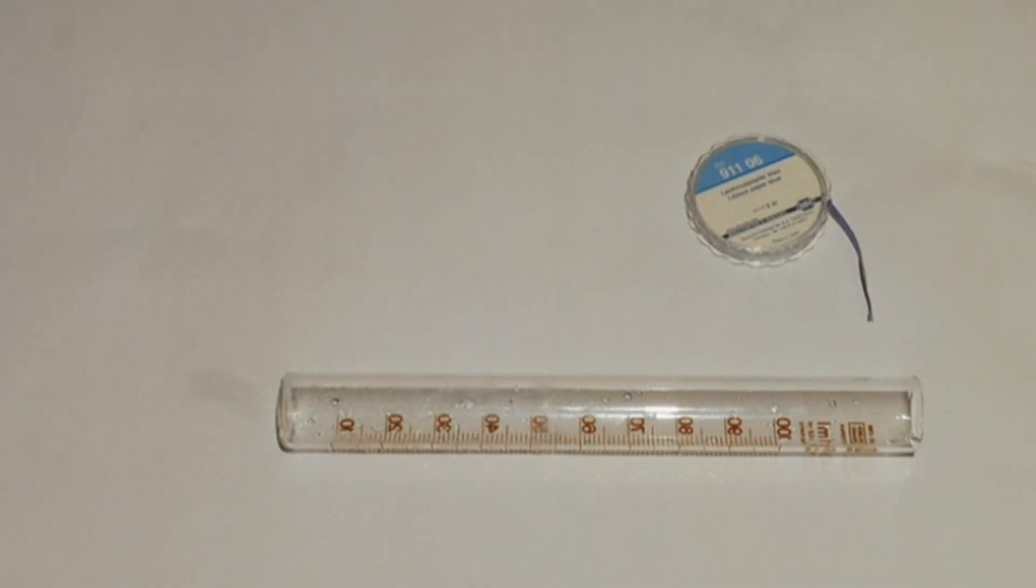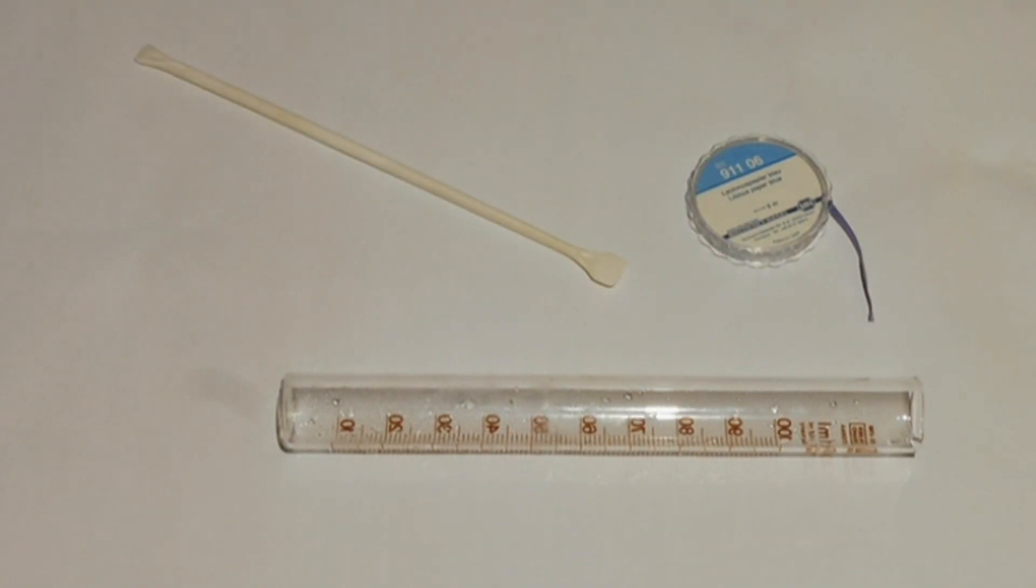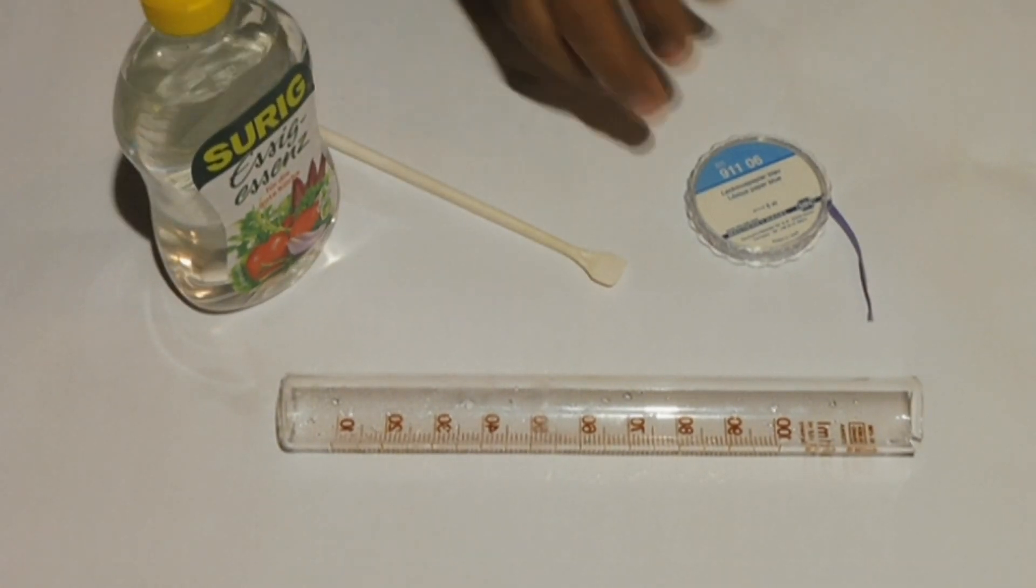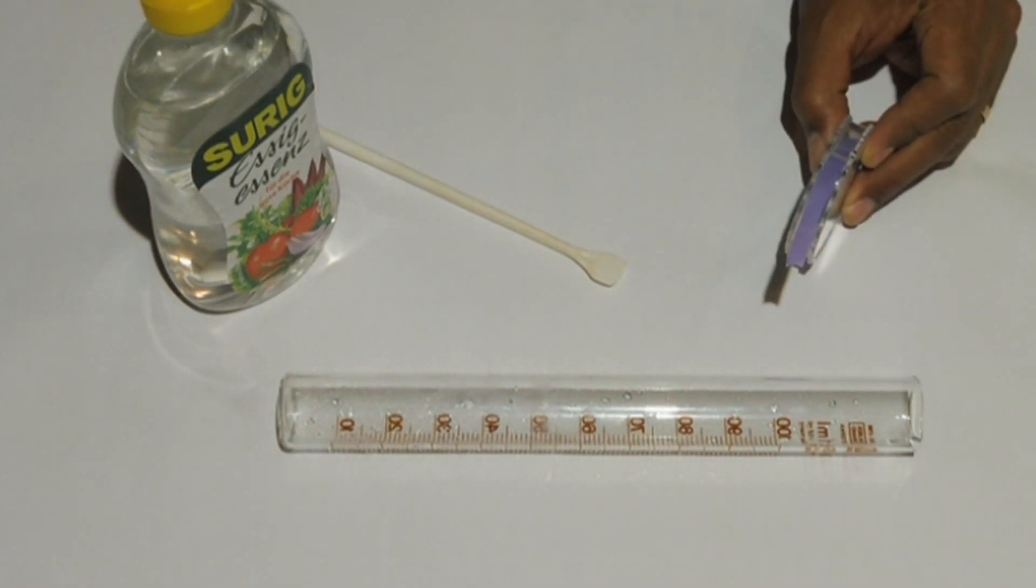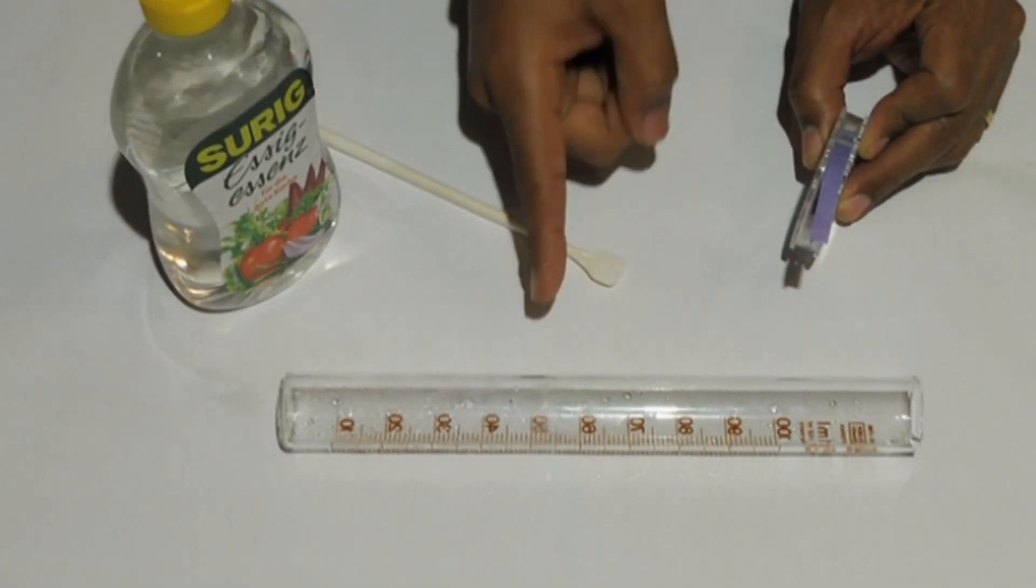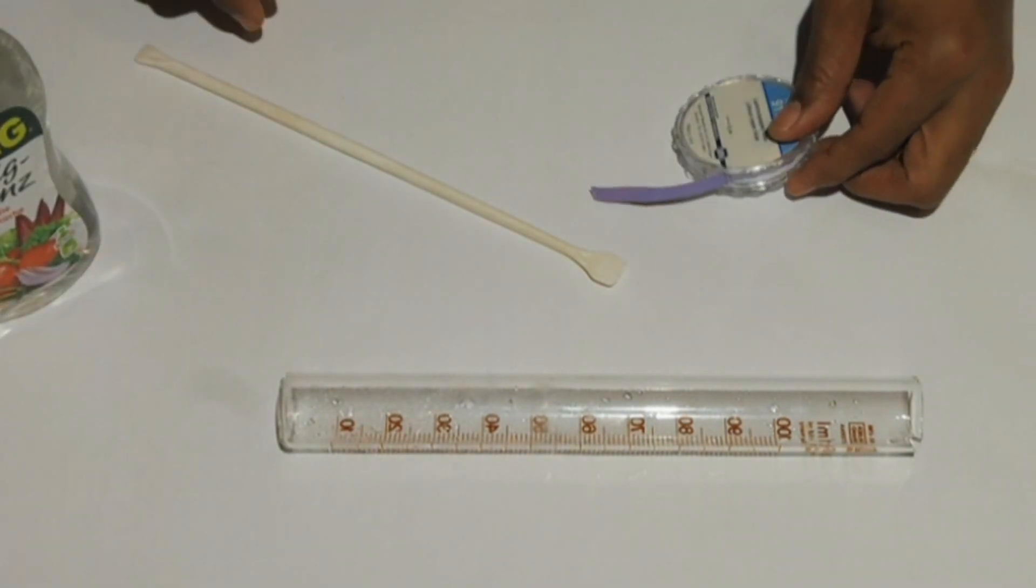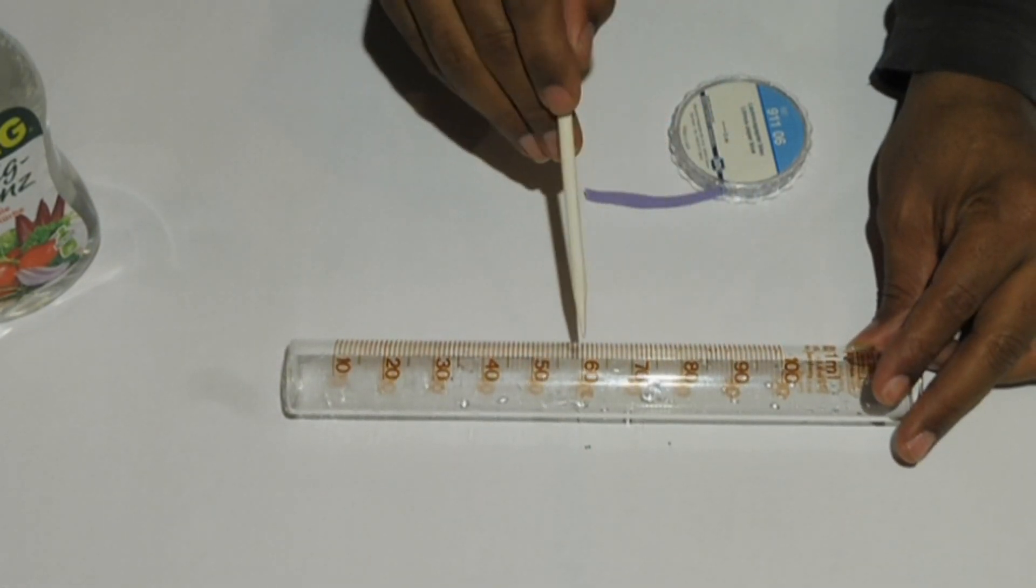Take the litmus paper and the stirring rod. The rod will be used to insert the litmus paper into the graduated cylinder. Take the vinegar, which is our acid. Acids change the color of blue litmus paper to red. When the litmus paper changes to red, it will show that the vinegar vapor is at that location.